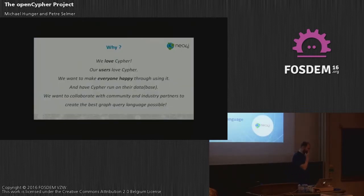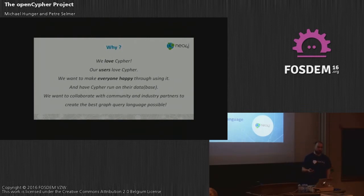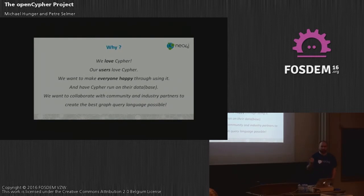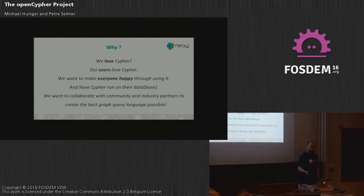In October we launched the OpenCypher project with the goal of turning Cypher into an open graph query language. Right now Cypher has been developed and implemented only by Neo4j. With OpenCypher we want to make it open and hand it over to everyone — to use, to implement, to do whatever. We do this because we love Cypher and our users love Cypher, and we want everyone to be able to run Cypher on their own data and their own databases.